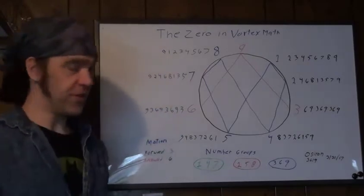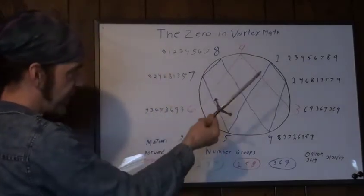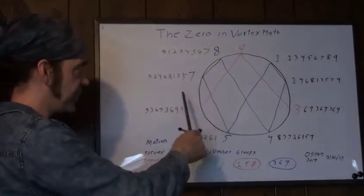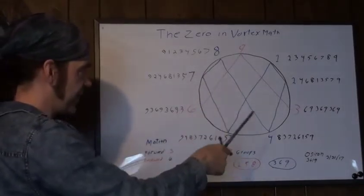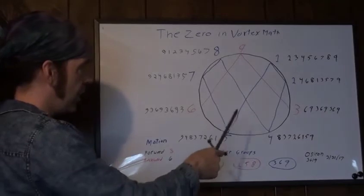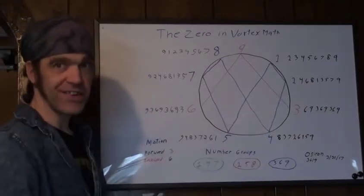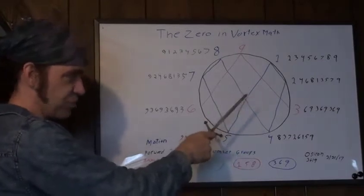So everything that goes on the same angle as the nine-three will reduce to three. Now, it's the opposite for the six. Once you employ the six angle, everything becomes a six. Eight plus seven is fifteen, which is six. Nine plus sixteen is fifteen, which is six. Five plus one is six, and four plus two is six. So everything on this angle will reduce to a six.